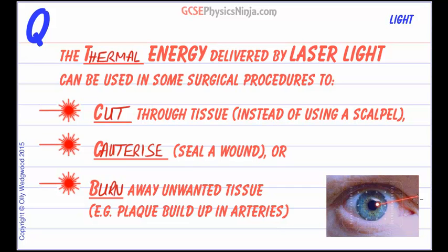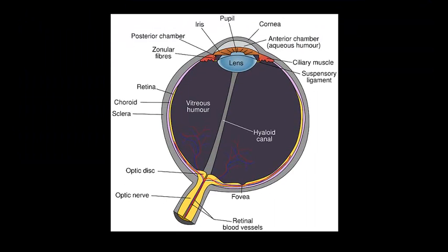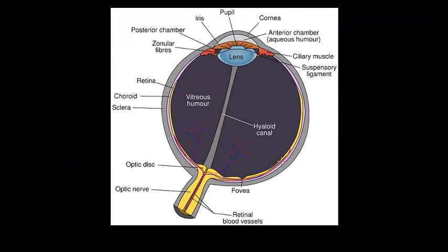Laser light can be used in eye surgery, and typically for retinal surgery. That's where the laser light will be shone through the cornea — that's the lens at the front of the eye — and that won't cause any damage because the cornea lets the light transmit straight through it without absorbing any.